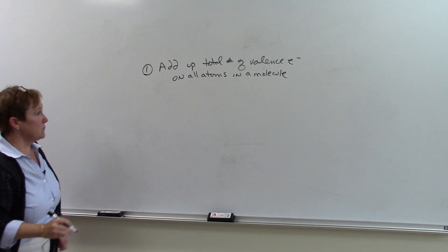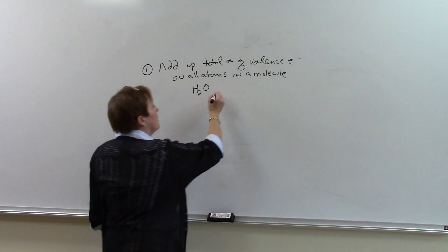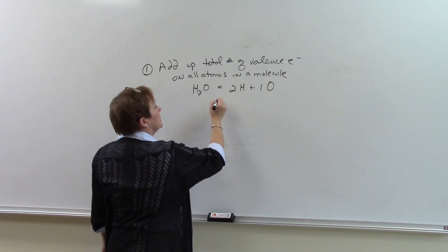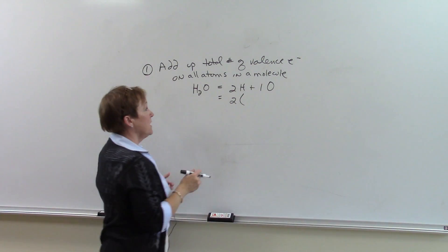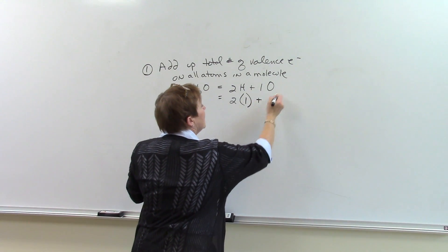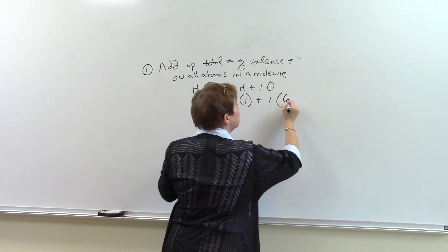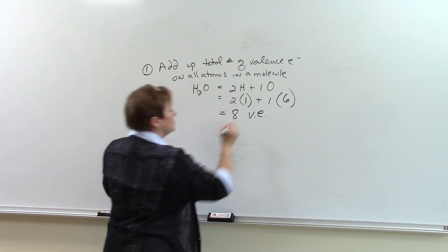For example, we are going to do water, H2O. H2O is made up of two H's plus one oxygen. We know because hydrogen is in the 1A column of the periodic table, there's one valence electron. We know that oxygen, because it's in the 6A column of the periodic table, has six electrons. So all together we have eight valence electrons.